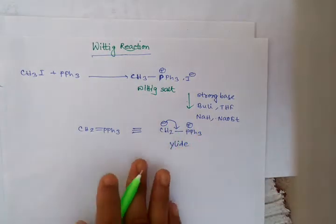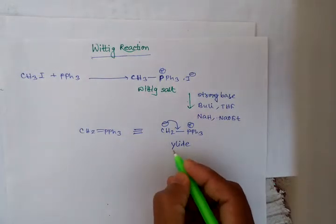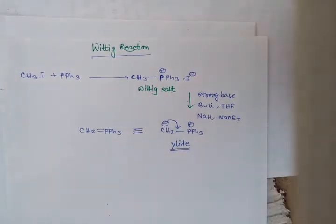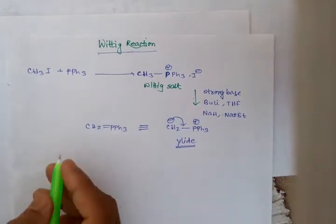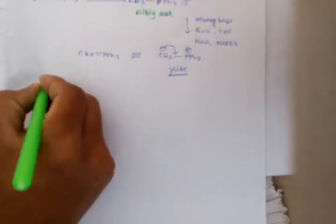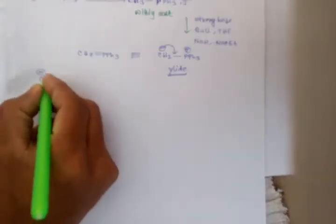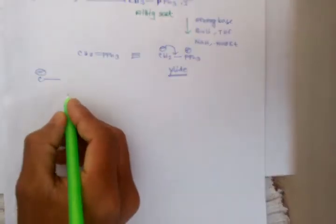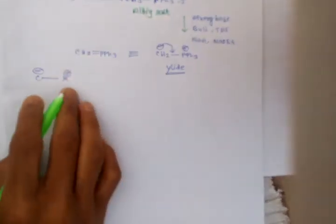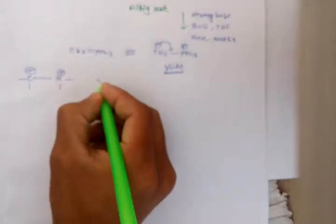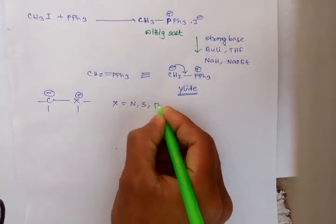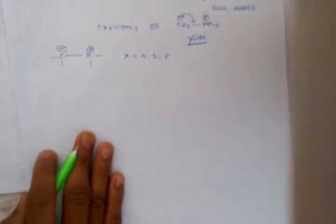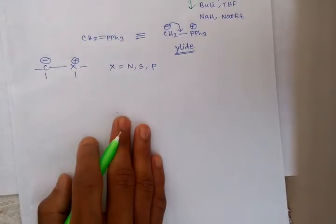The negative charge goes here. This is an ylide. What is an ylide? An ylide is a species which contains an ionic carbon covalently bonded to a positively charged heteroatom. Here X may be nitrogen, sulfur, or phosphorus.